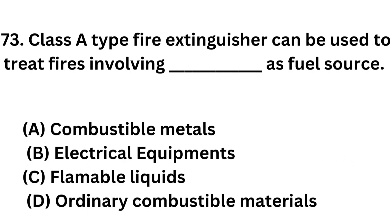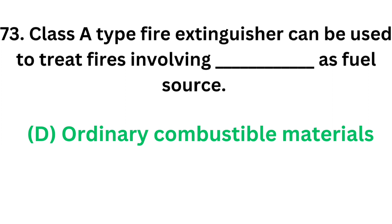Question number 73. Class A type fire extinguisher can be used to treat fires involving which fuel source? Option A: Combustible metals. Option B: Electrical equipment. Option C: Flammable liquids. Option D: Ordinary combustible materials. The correct answer is Option D: Ordinary combustible materials. Class A type fire extinguishers can be used to treat fires involving ordinary combustible materials as a fuel source.